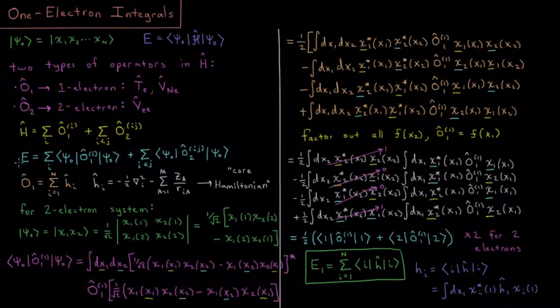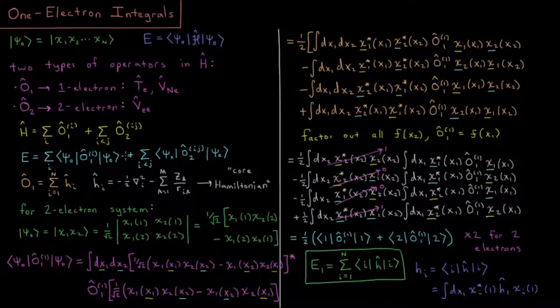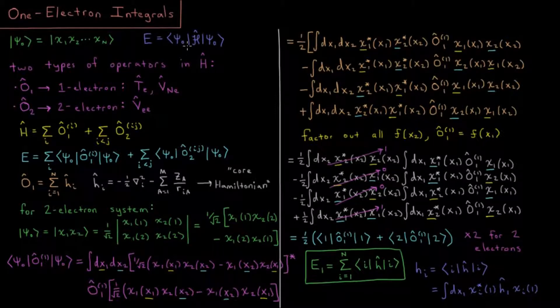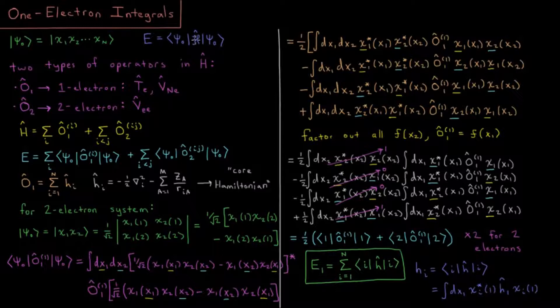Our total energy is going to break up into a sum of one-electron and two-electron integrals as we take this H and substitute it in the energy expression. Energy is going to be a sum over all electrons of ψ* O₁ ψ plus a sum over all electron pairs of ψ* O₂ ψ.